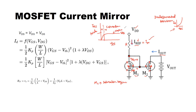In practice there will be some slope in the saturation region, and the slope of that line is equal to 1/RO, where RO is the output resistance of the MOSFET. These concepts were discussed in previous modules, so if you are new to this please refer to those modules.